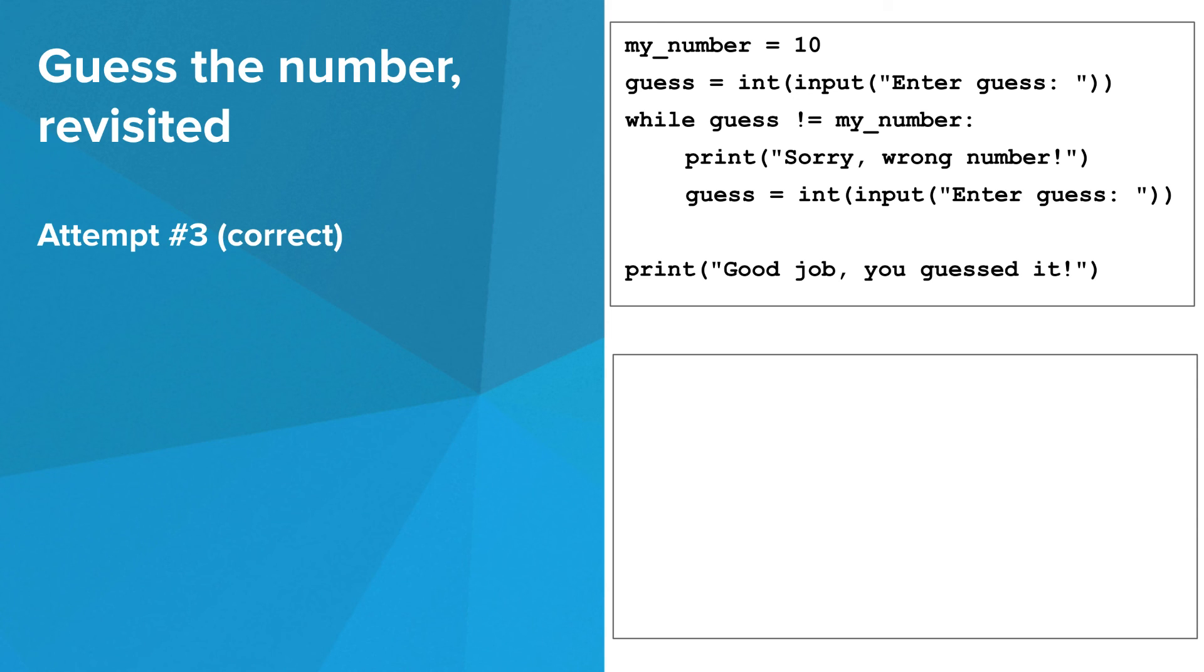As one final touch, we can add a print statement at the end of the program. Notice that we don't need to check anything before printing. If the final print statement is reached, that means that the condition in the while loop must have been false. This means guess is not not equal to my_number, which means it is equal to my_number.